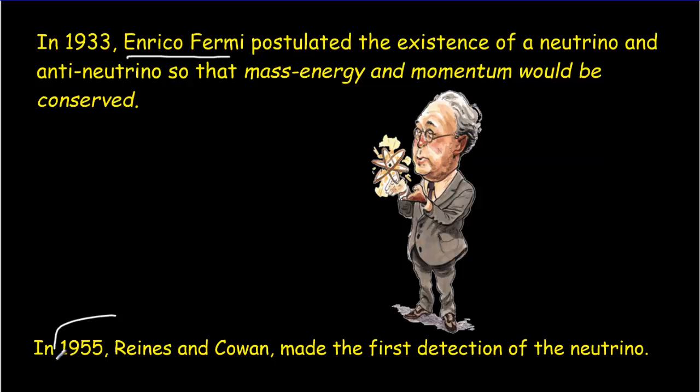It wasn't until 1955, over 20 years later, that Reines and Cowan came up with an experiment and made the first detection of the neutrino and confirmed its mass and properties.